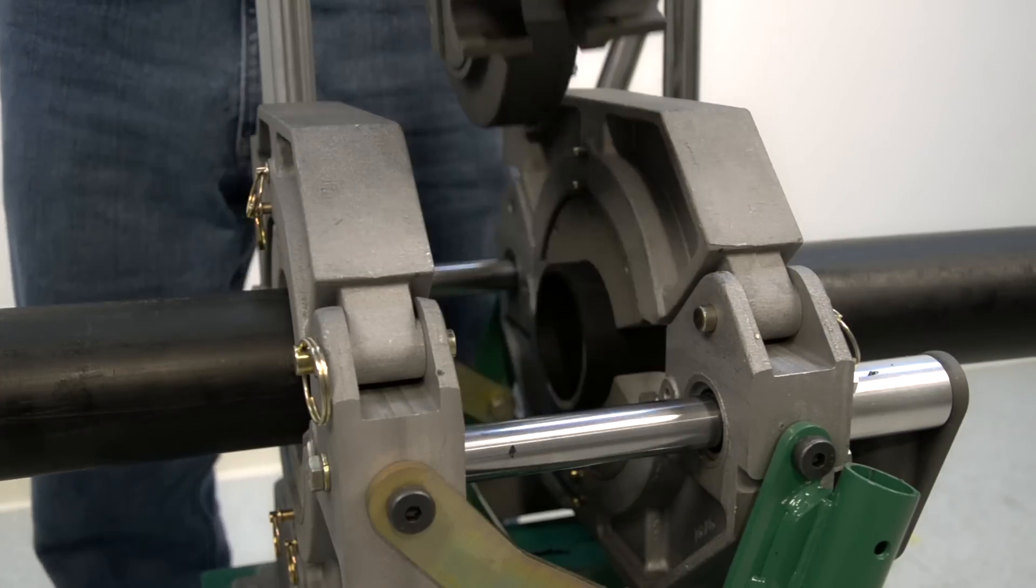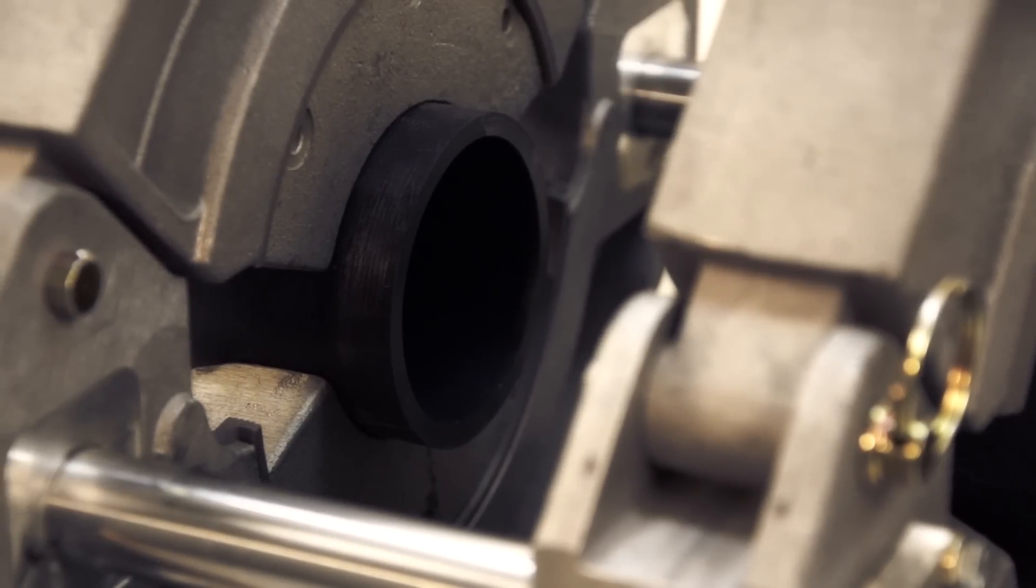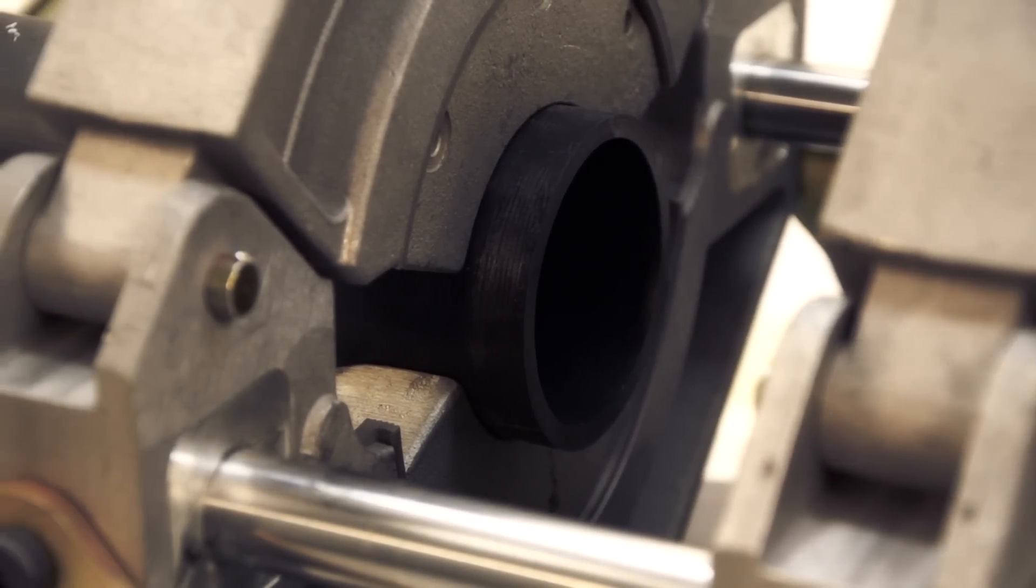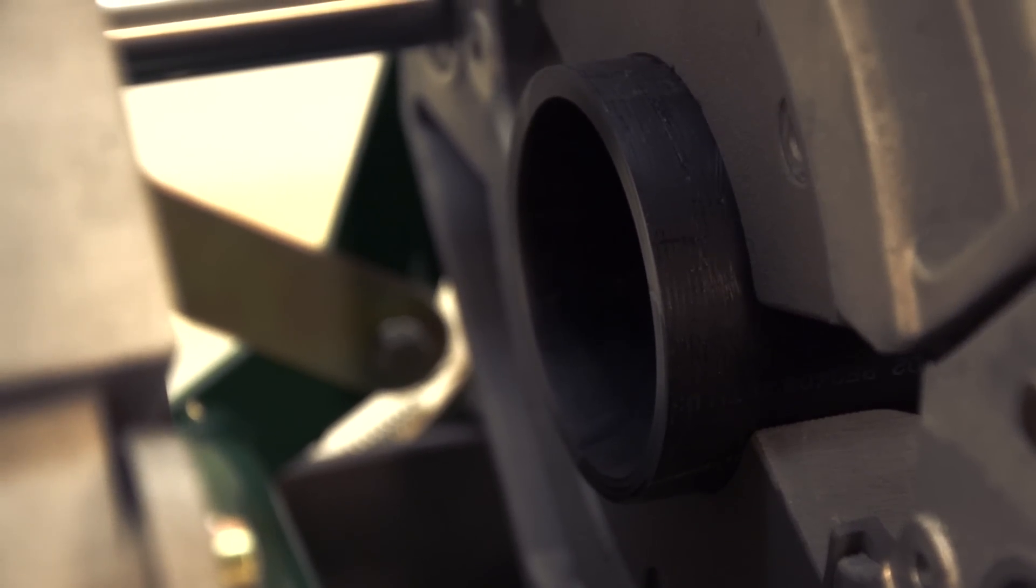Now inspect the pipe ends to ensure at least a full ribbon of material has been removed. This will prove that the exposed material is as clean as possible and that when the pipe ends are brought together, it will be a flush, uniform fit.